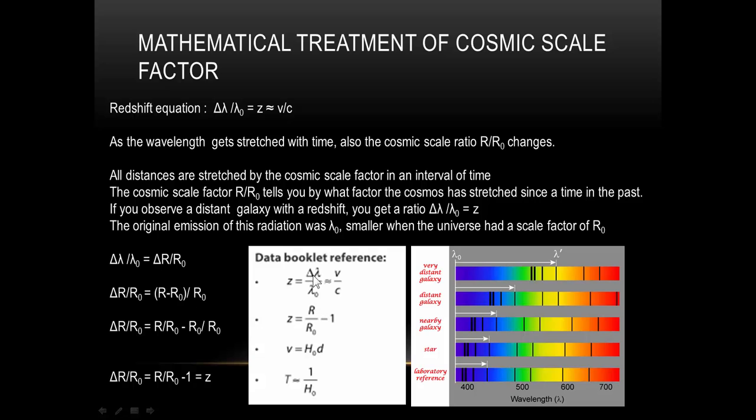In fact, from the data booklet, this is the redshift: delta lambda divided by lambda nought, and it translates quickly onto this. The redshift is equal to R divided by R nought minus 1.